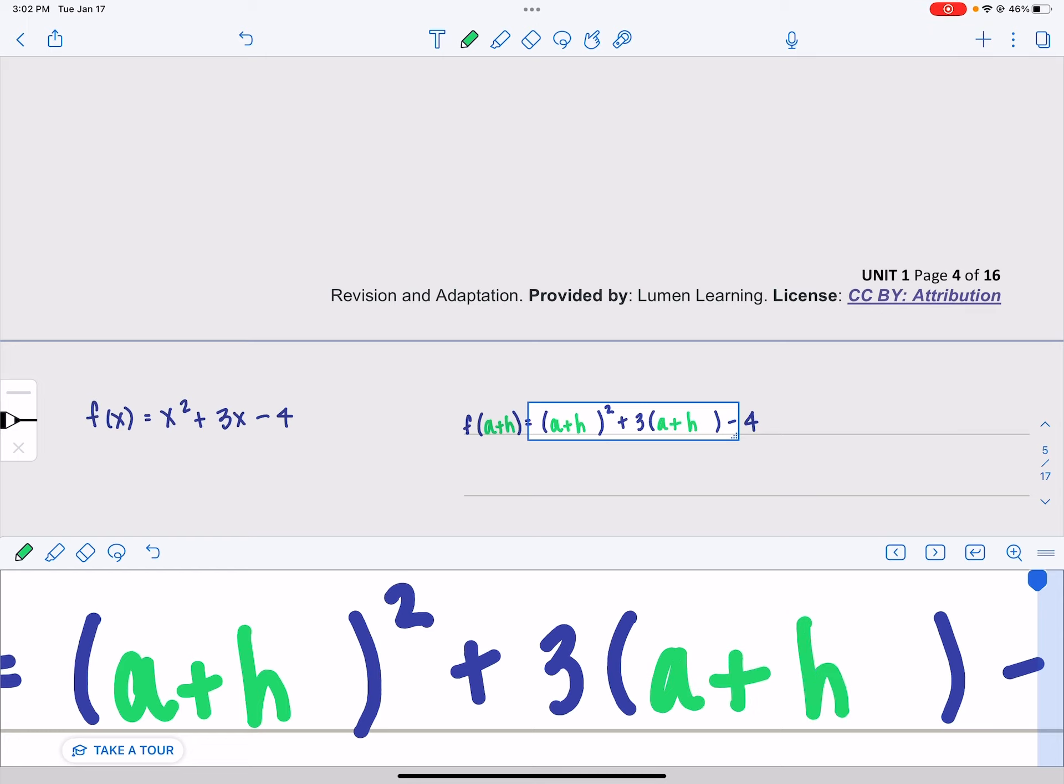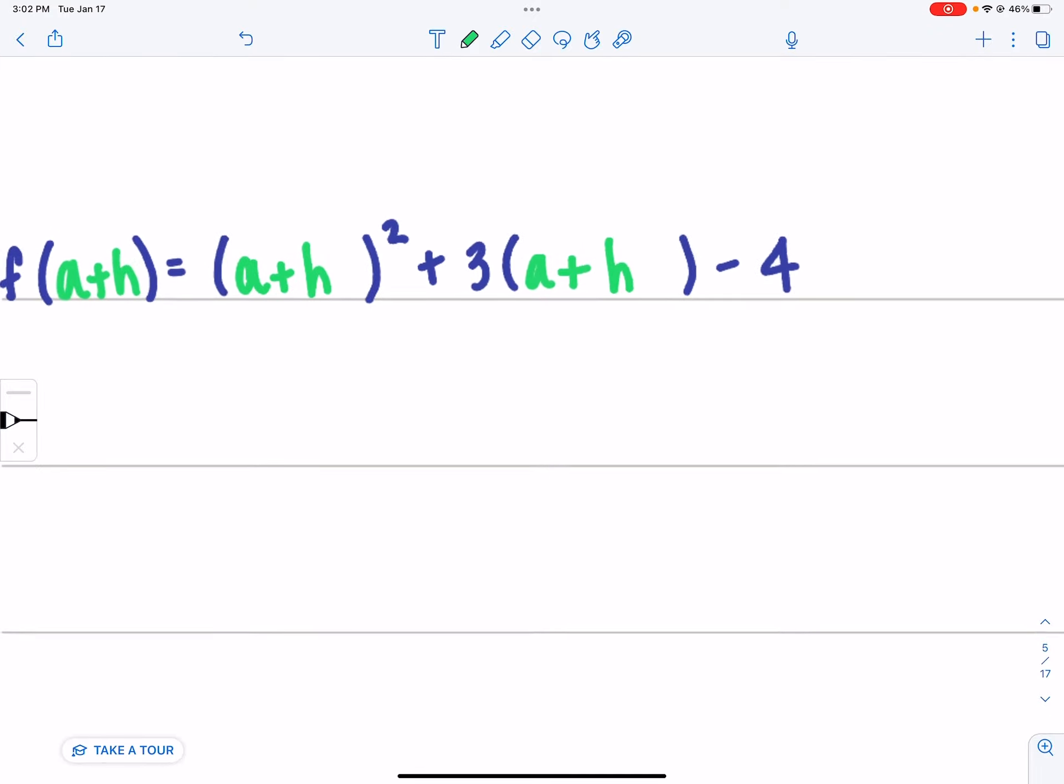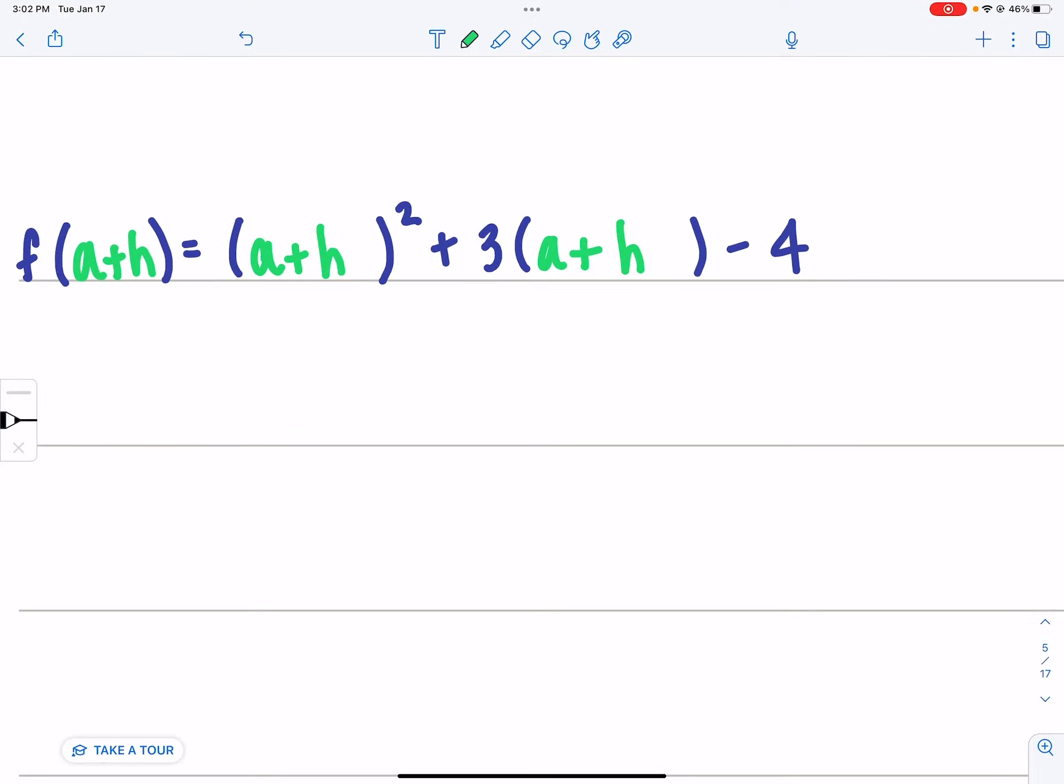Every hole gets an a plus h. Now here's where the algebra might have gotten a little bit sticky for you. When I expand a plus h quantity squared, that changes to a plus h times a plus h.